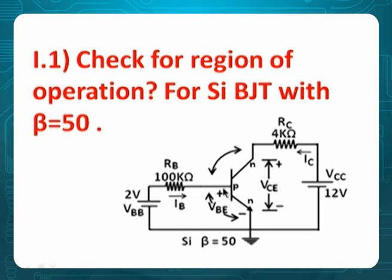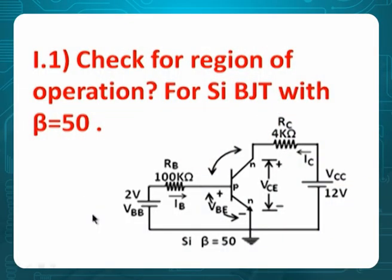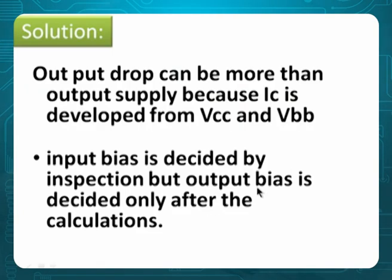With all this discussion, I am saying: if they are asking you to check which region is operating, always doubt at the output side, not at the input side. At the input side I am taking for granted that the supply will decide forward bias. So input is forward — output status we need to confirm. That's the question. Input bias is decided by inspection, but output bias is decided only after calculation.